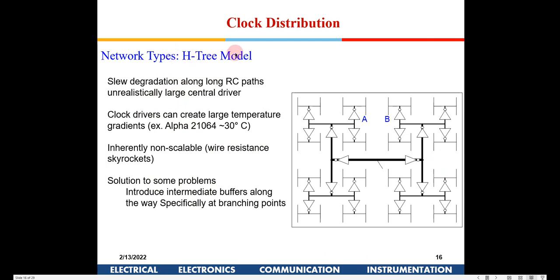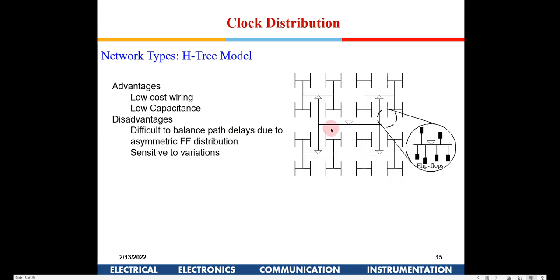Another disadvantage is slew rate degradation along the tree — as you keep moving from a bigger edge to a smaller edge, the slew will keep increasing. Also, regarding the main clock driver: if you look at a normal edge, the current flowing in the top-level edge will be four times the current flowing in the next level edge.